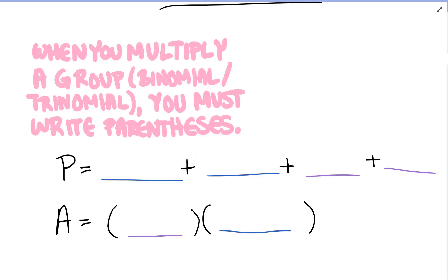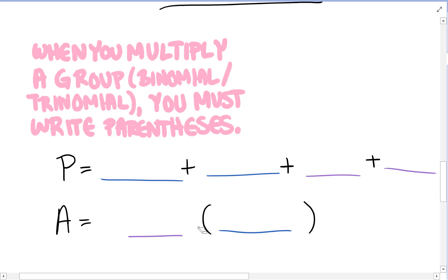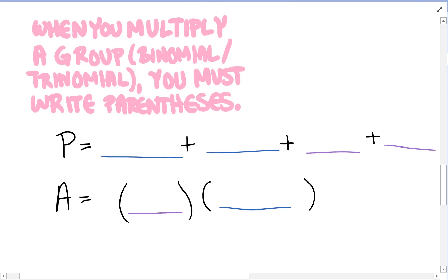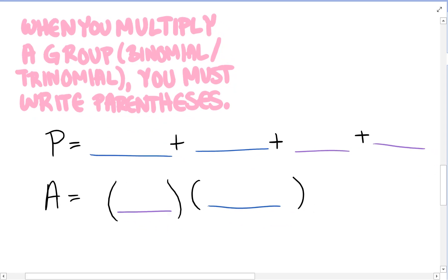To recap: when you multiply a group like a binomial or trinomial, you must write parentheses to remember to double distribute, or use the box or window method when calculating area. And as always, perimeter is the distance around, so simply add up all the side lengths.